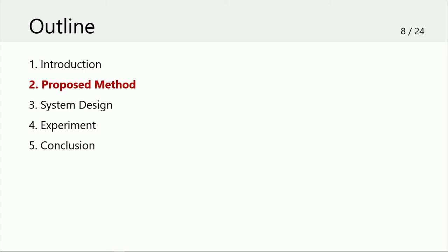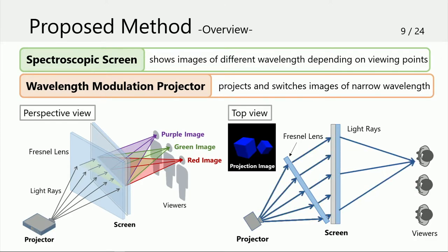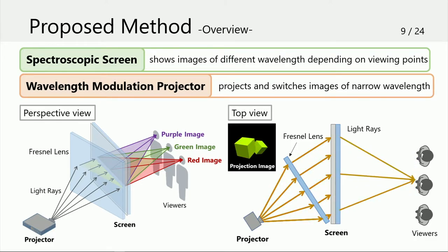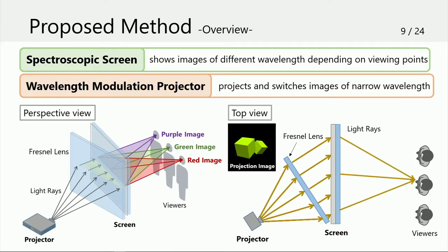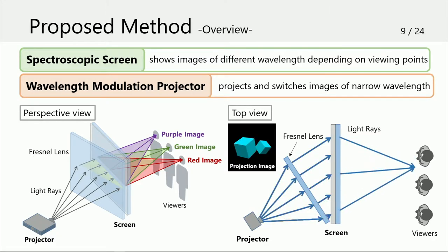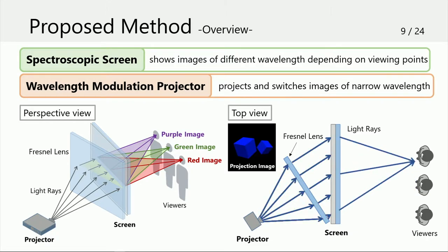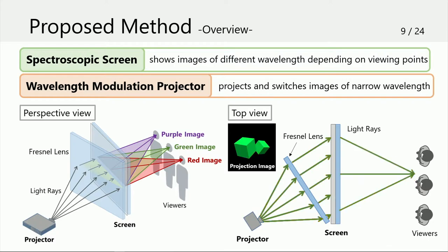We propose a display which consists of a spectroscopic screen and a wavelength modulation projector. The spectroscopic screen shows images of different wavelengths depending on viewing point by chromatic dispersion. The wavelength modulation projector projects images of narrow band wavelengths while switching them at high speed. Therefore, this system can show 3D images to multiple viewers by projecting proper images depending on each wavelength. The installation is easy despite the large screen because only one projector is used, and no vibration or noise occurs as the screen has no mechanical motion.